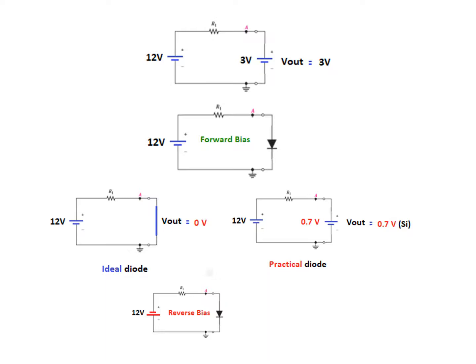What will happen when the battery polarity is reversed? This is a reverse bias. When the positive terminal of the battery touches the positive terminal of the diode, this makes the diode forward biased. Now in this case, the positive terminal of the battery is touching the negative terminal of the diode. Therefore this is a reverse bias, so the diode will behave like an open circuit. No current will flow, and the total voltage — negative 12 volts — will appear across this. The output is negative 12 volts. These are the basic concepts. Now let us go into the actual circuit.